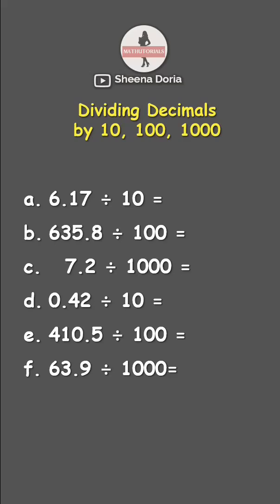First example, we have 6.17 divided by 10. So same with multiplication, we will count the number of zeros. So here, 10 has one zero, but this time we will move the decimal point to the left instead of moving it to the right since we are dividing.